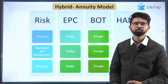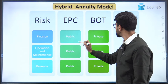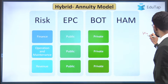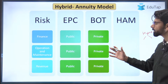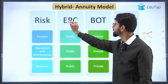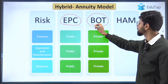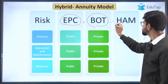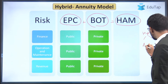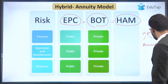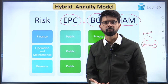Now let us proceed ahead and understand the hybrid annuity model. First, let us decode the word 'hybrid' — it means an amalgamation of two different entities. In this case, the two different models — EPC and build-operate-transfer — are amalgamated together to give us the hybrid annuity model. And apart from that, what is this 'annuity'? Let us try to understand using an example.